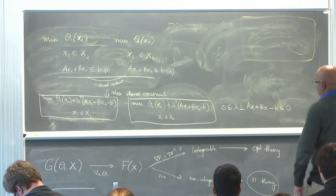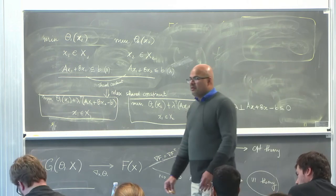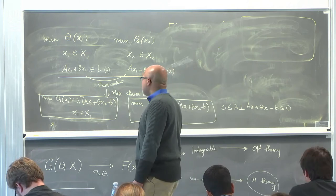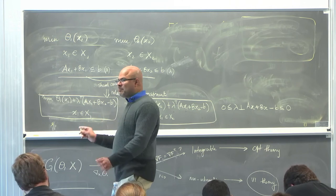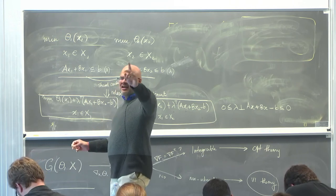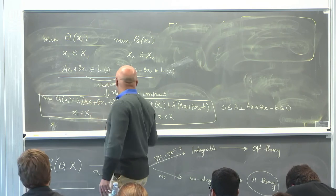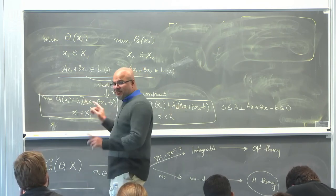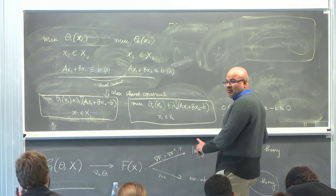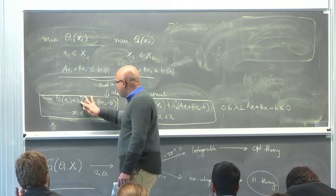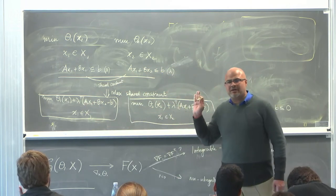Lambda is basically a parameter to both players and I've kept it common. As Hassan said, I could have made this lambda1 and lambda2, but if I do that, I need two separate complementarity requirements. I'll just keep it common—and the reason I keep it common, you'll see when I write it out.